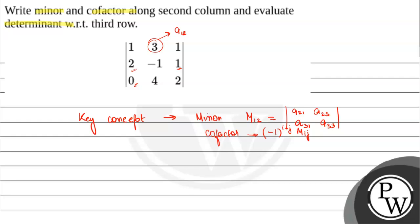The determinant formula is a₁₁C₁₁ plus a₂₁C₂₁ plus a₁₃C₁₃. Now we will use this formula for the minor and cofactor. For the second column, we will use a₁₂, a₂₂, and a₃₂ to find the minor and cofactor.